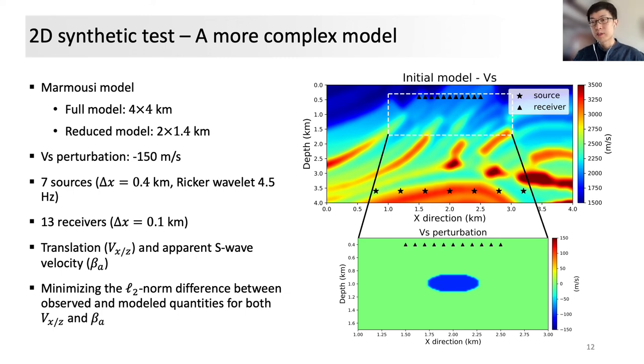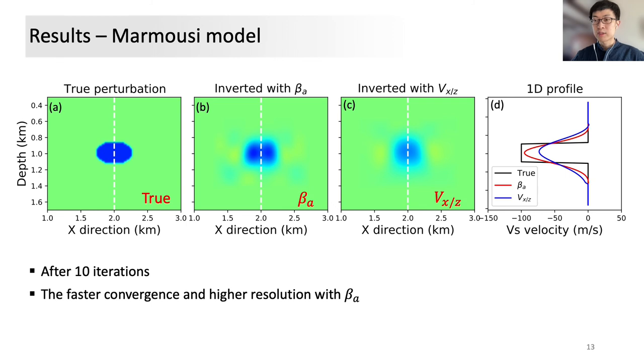In the fourth example, we simply want to test the same idea with more complex background models. We still use the same acquisition geometry, but modify the Marmousi model as our background models. We add the same shape and the same amount of S-wave anomaly within the area of interest to mimic the potential time-lapse perturbations. The localized inversion strategy stays the same. The results are shown here.